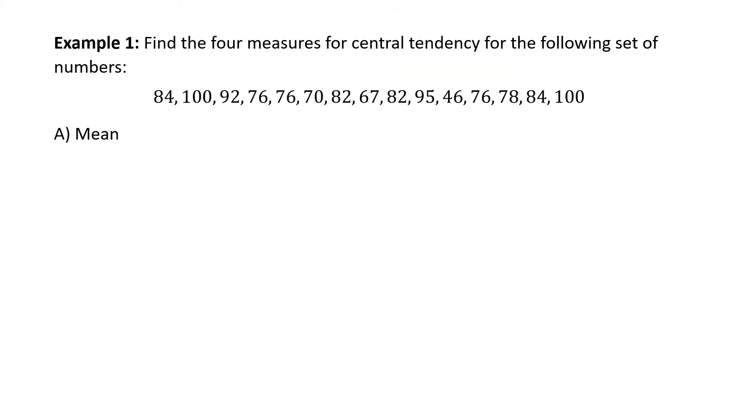Find the four measures for central tendency for the following set of numbers: 84, 100, 92, 76, 76, 70, 82, 67, 82, 95, 46, 76, 78, 84, 100. Part A, find the mean.